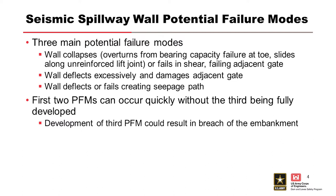The second mechanism is the wall deflects excessively and damages the adjacent gate enough to cause an uncontrolled release of the reservoir. The third is the wall deflects or fails, creating a seepage path behind the wall connecting to the reservoir. The first two failure modes can occur quickly without the third fully developing, resulting in gate failure and discharge limited to the spillway.